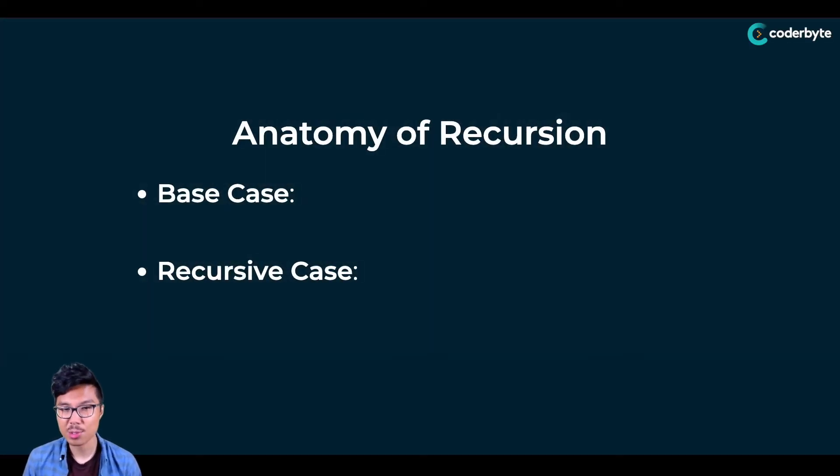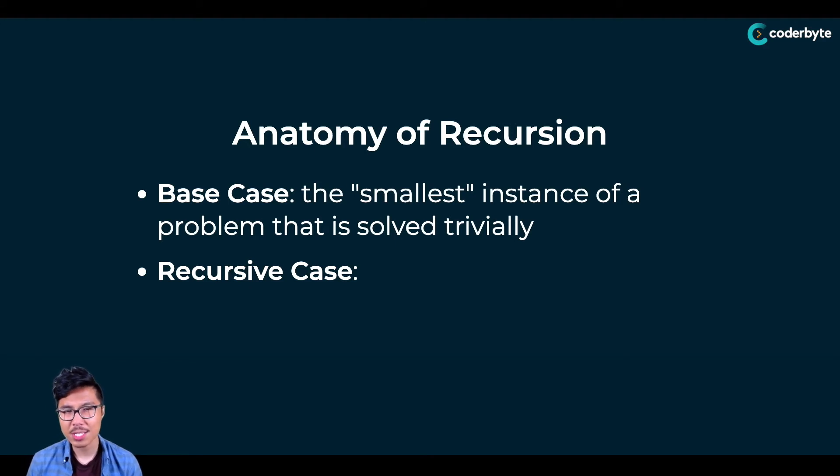Luckily, all recursive solutions are going to follow a similar pattern. They're all going to have two pieces of information: they're going to have some base case and also a recursive case. Looking at the base case first, the base case is going to refer to a scenario where we have the smallest instance of the problem that is solved trivially. That means we automatically know the answer. So when you're given this very small input, in constant time we automatically know the answer.